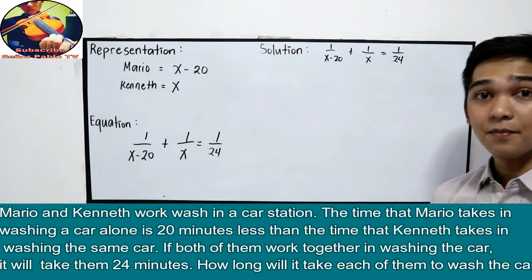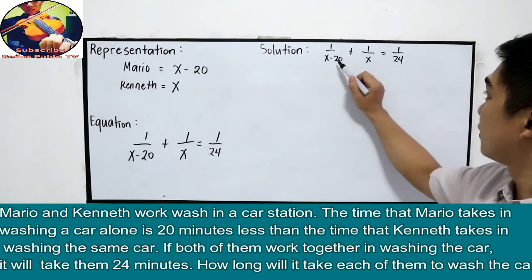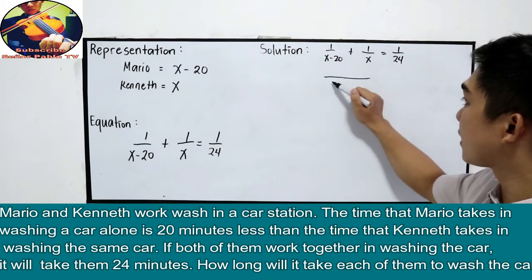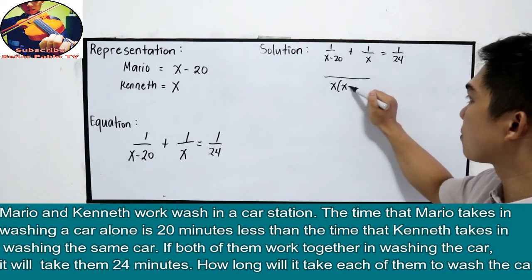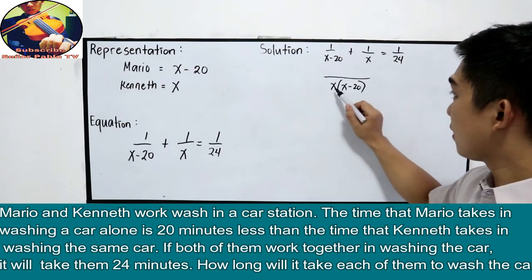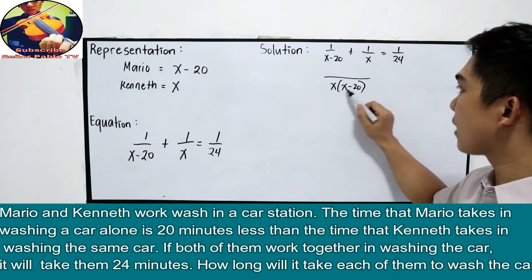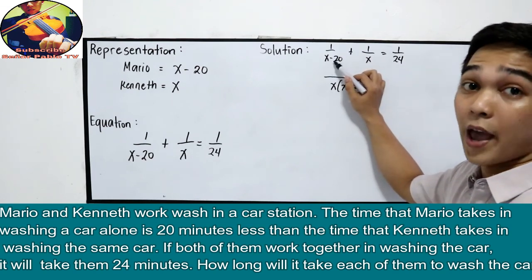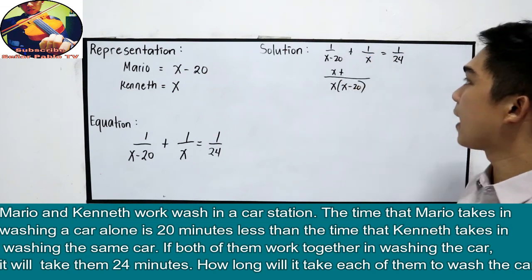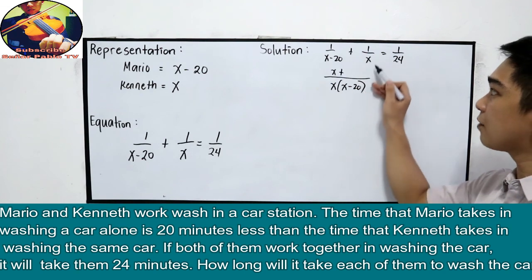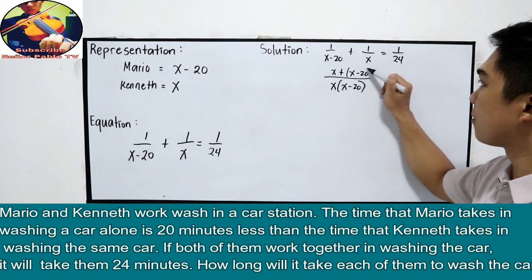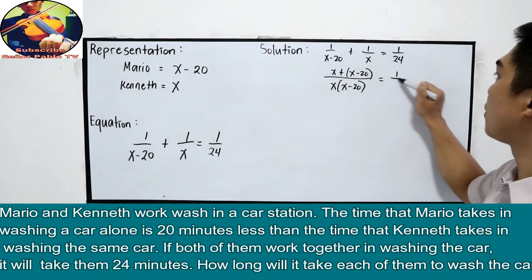Find the LCD. So, dito sa left side, yung LCD natin is x times x minus 20. So, divide natin x times x minus 20 divided by x minus 20. So, x na lang times 1, so x. Plus, x times x minus 20 divided by x. So, cancel yan, lagiki x minus 20. Is equal to 1 over 24.